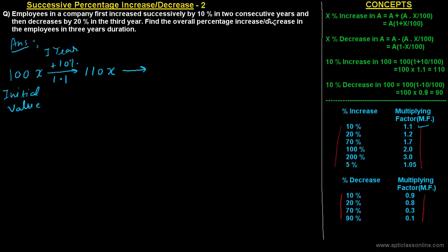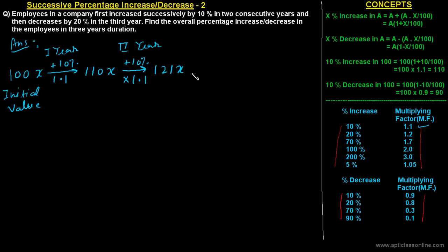In the second consecutive year, the increase is again 10 percent. We multiply again by the factor 1.1. So 110X multiplied by 1.1 gives us 121X.